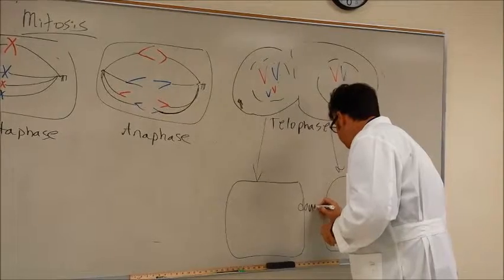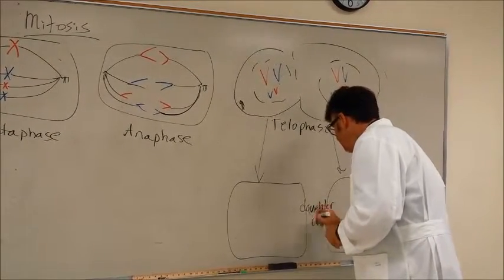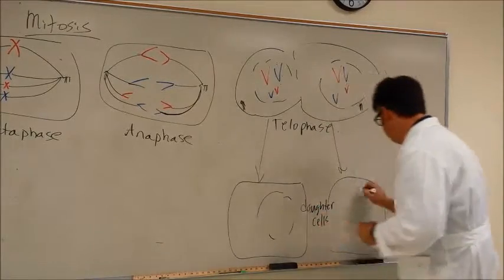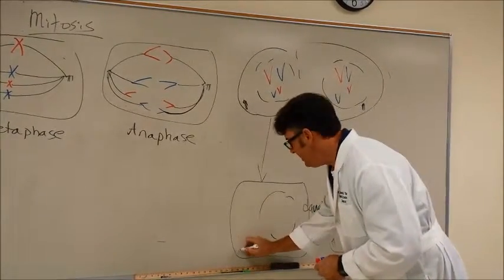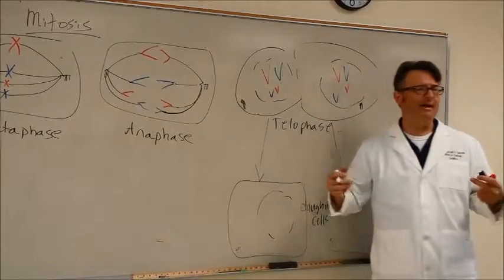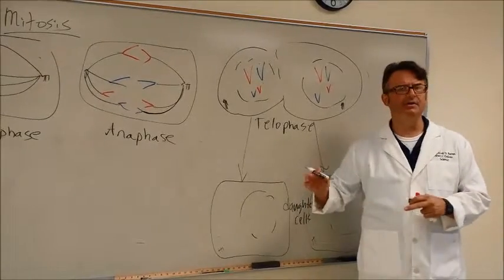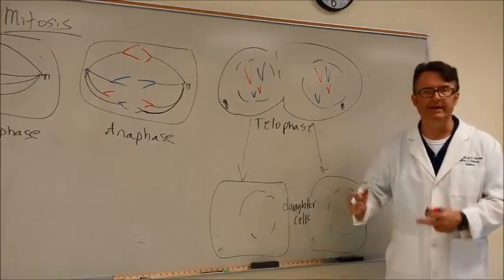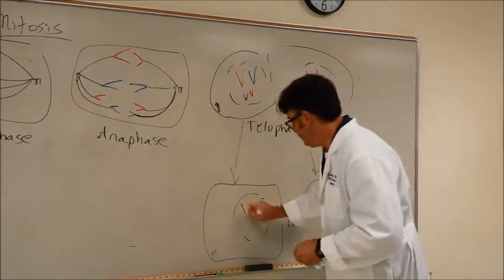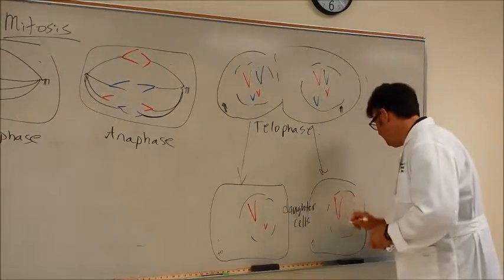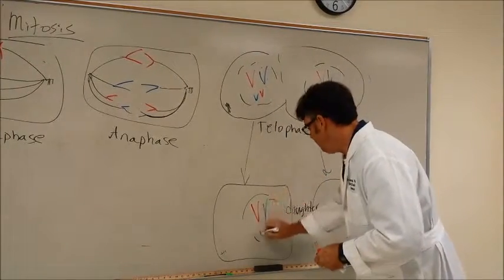So we have an intact nucleus on both sides. We have the centrioles still intact. Remember that these cells have mitochondria and smooth endoplasmic reticulum and all of the organelles. It's just that I'm not drawing all this in here. There is a big red, a baby red, a big blue and a baby blue.